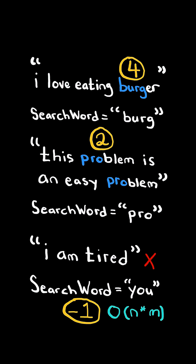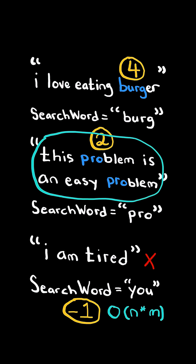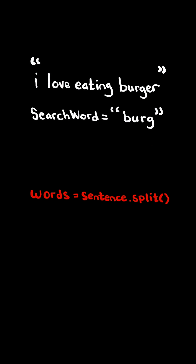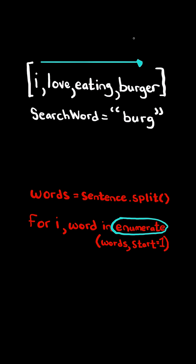We will solve this in O of n times m time, where n represents the number of words in the sentence and m is the max length of a word. First, we will split the sentence by a space, and this will create a list of all the individual words in the sentence.